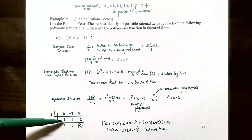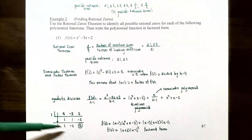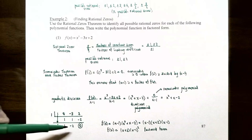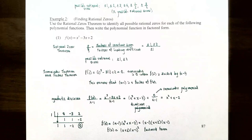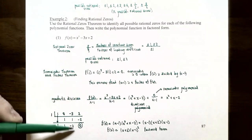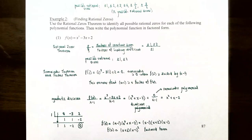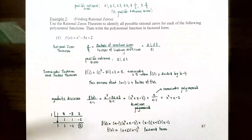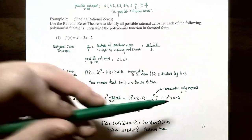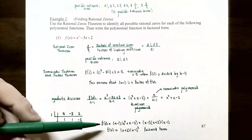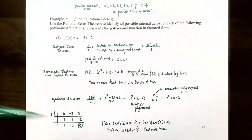Carrying out synthetic division: drop down 1; 1 × 1 = 1, add 0 + 1 = 1; 1 × 1 = 1, add −3 + 1 = −2; 1 × (−2) = −2, add 2 + (−2) = 0. The remainder is 0 as expected. The quotient polynomial has coefficients 1, 1, −2, so it is x² + x − 2. Therefore x³ − 3x + 2 divided by x − 1 gives quotient x² + x − 2 with no remainder, meaning f(x) = (x − 1)(x² + x − 2).